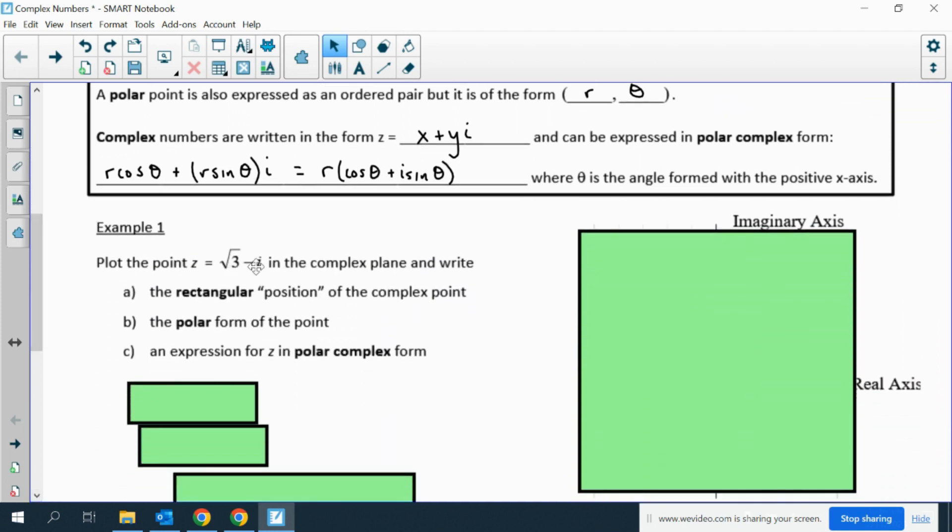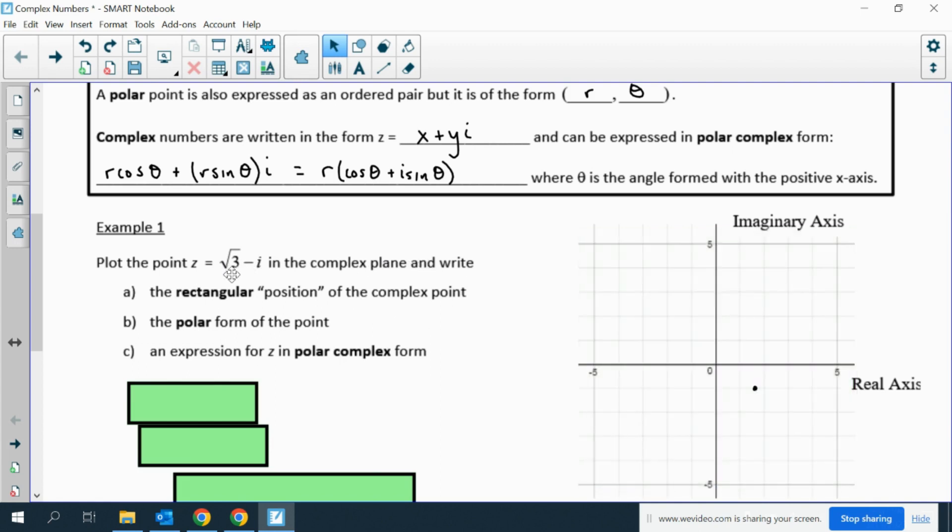Example 1: Plot this point in the complex plane. That's just plotting the point root 3, negative 1, which is over here. Then the rectangular position, we write root 3, negative 1.